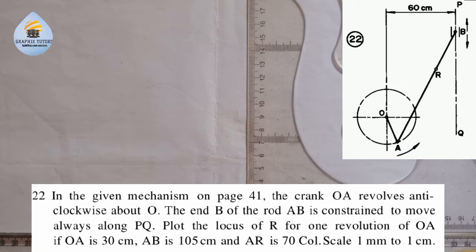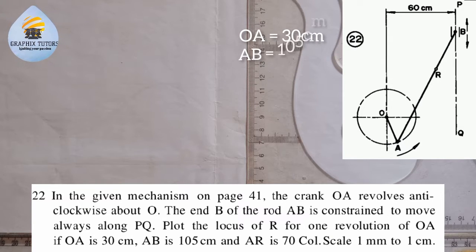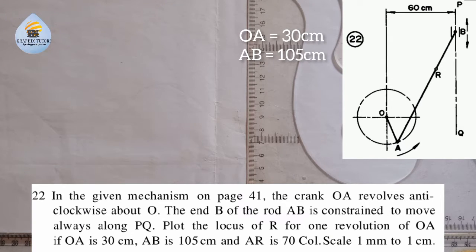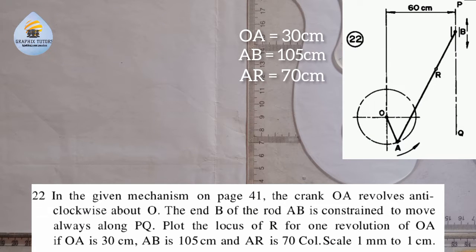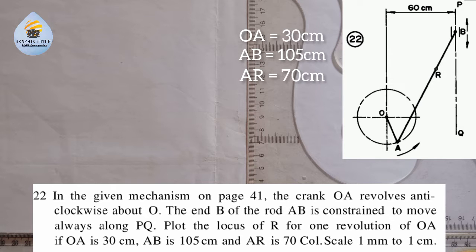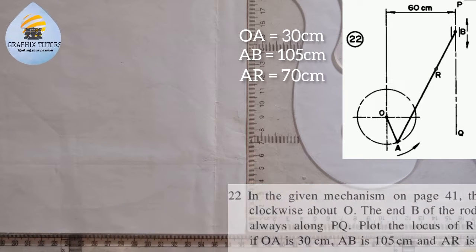The given dimensions are: OA = 30mm, AB = 105mm, and AR = 70mm. The scale is 1mm equals 1cm, meaning for every 1mm on paper it represents 1cm in reality.